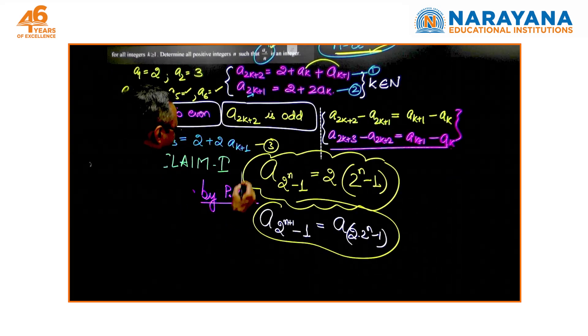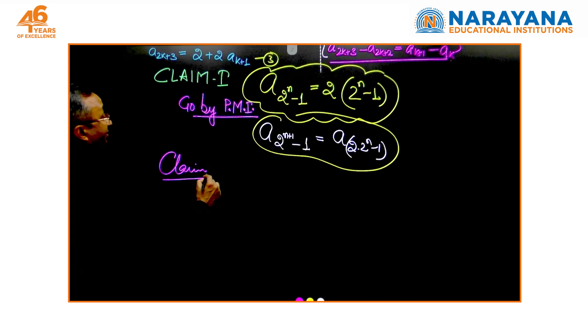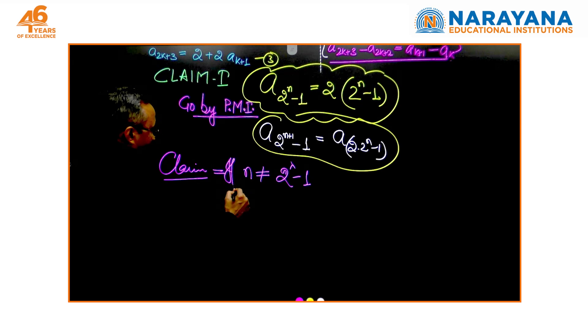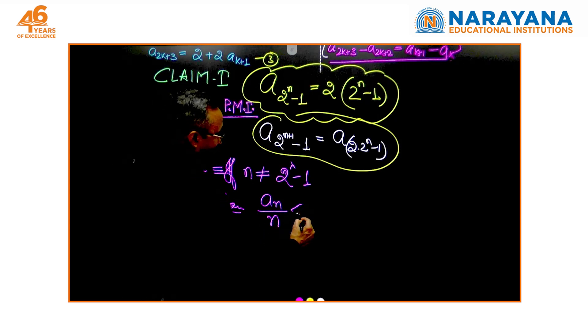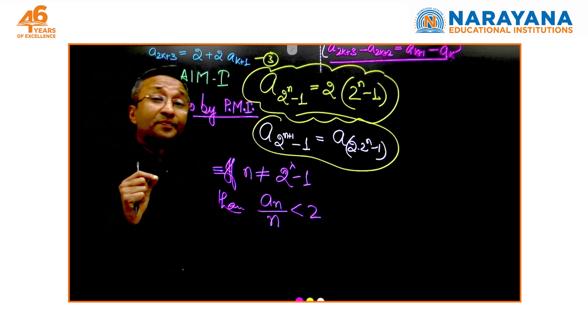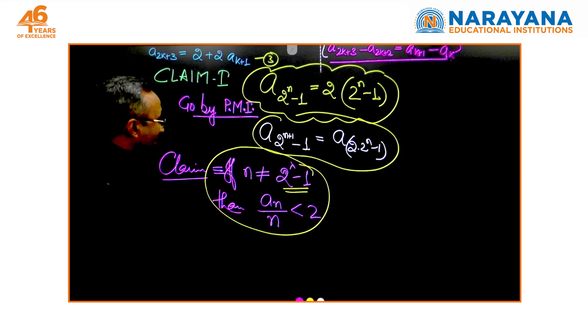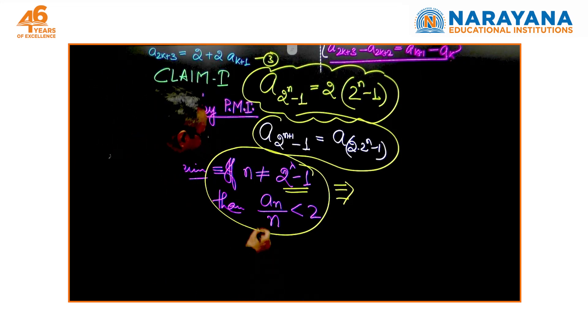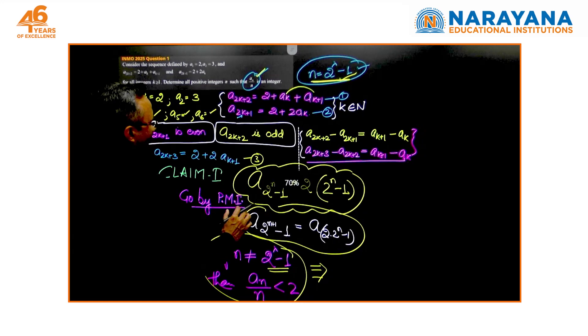One particular solution to this entire question is that any n of the form 2^λ - 1 is definitely a solution because then it is an integer and an integer is nothing but we have concluded for n of the form 2^λ - 1, a_n upon n is an integer. Now, the next claim that we are going to make is—I will just create some space—if n is not of the form 2^λ - 1, a_n upon n is less than 2, and once again we will use principle of mathematical induction.